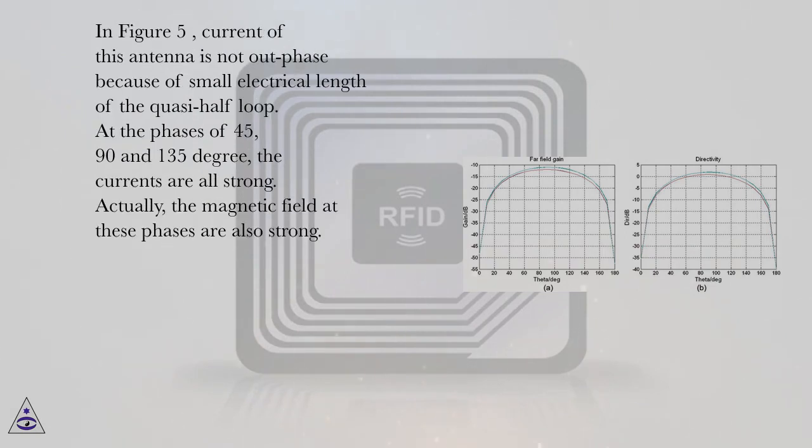In Figure 5, current of this antenna is not out of phase because of small electrical length of the quasi-half loop. At the phases of 45, 90, and 135 degrees, the currents are all strong. Actually, the magnetic field at these phases are also strong.